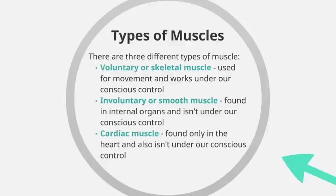We then have what we call cardiac muscle, found only in the heart. This also isn't under our conscious control — it works automatically and subconsciously. Another important thing about cardiac muscle is that it never tires, which is vital because if it did, our heart would stop working and we'd no longer be able to live.